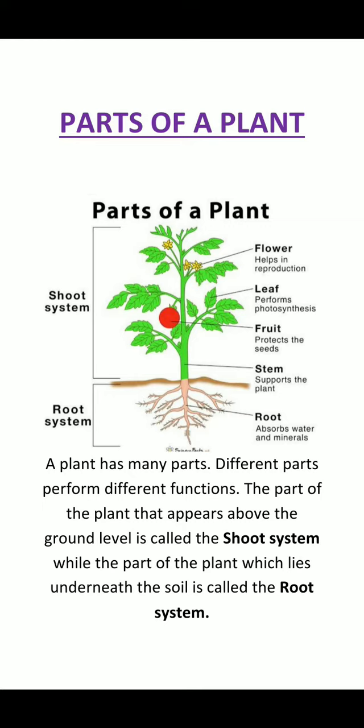Let us talk about the root. The root is the first part of a plant that grows from the seed when it germinates. The root holds the plant firmly to the ground and absorbs water and minerals from the soil, which are needed for the plant to grow.